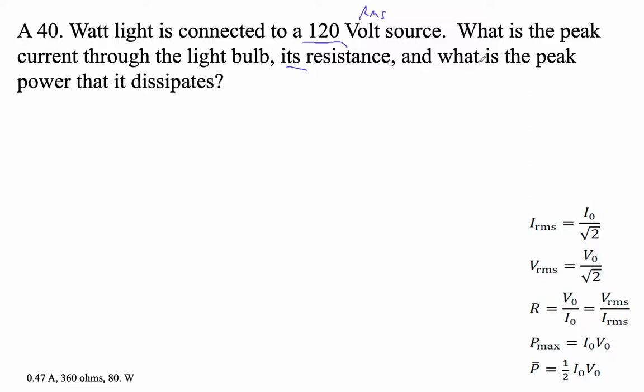Okay, so peak current. Let's find the RMS current, and then we'll find the peak current. So I_RMS is equal to, we just do some math here. It's power divided by voltage. I'm using the formula power is IV.